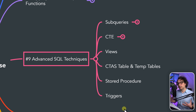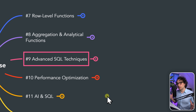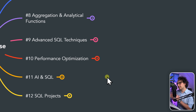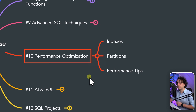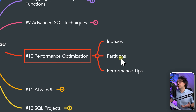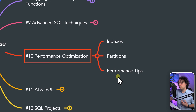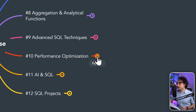Once you start writing a lot of SQL code, you'll notice some queries run slowly. That's why you need to learn how to optimize query performance. Techniques include creating indexes and partitions. At the end, I'll share the top 10 best practices I've learned from real projects on how to optimize the performance of your queries.